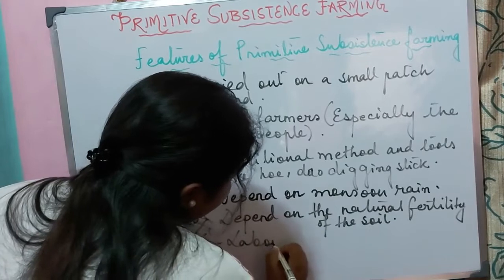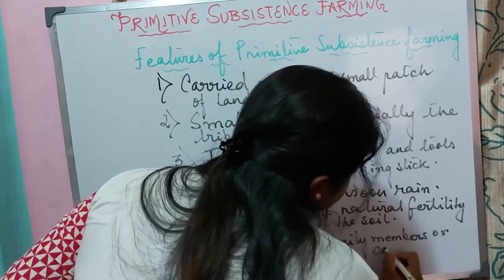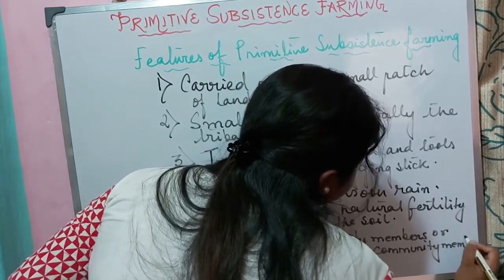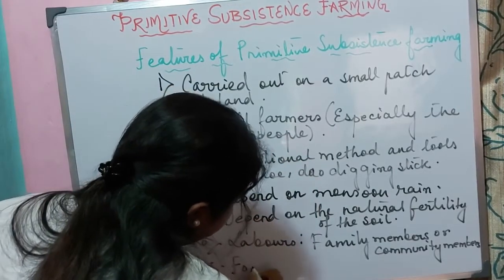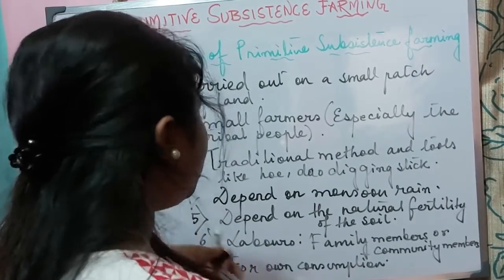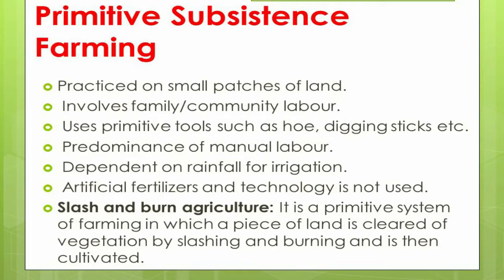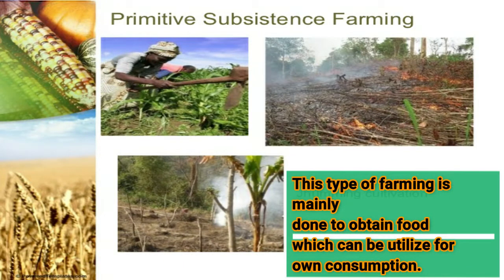As for laborers, the work is mostly done by the family members or collectively by the community members. This type of farming is mainly done for own consumption — the production obtained is mainly used for own consumption. So these are the features of primitive subsistence farming: small patch of land, practiced by small and tribal farmers, traditional tools, monsoon rain dependency, natural soil fertility, family or community labor, and production for own consumption.